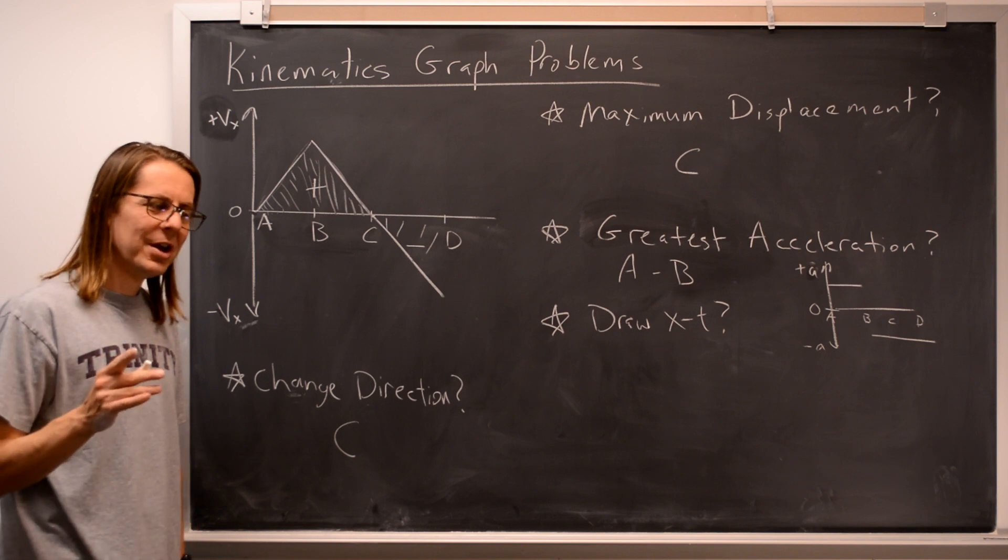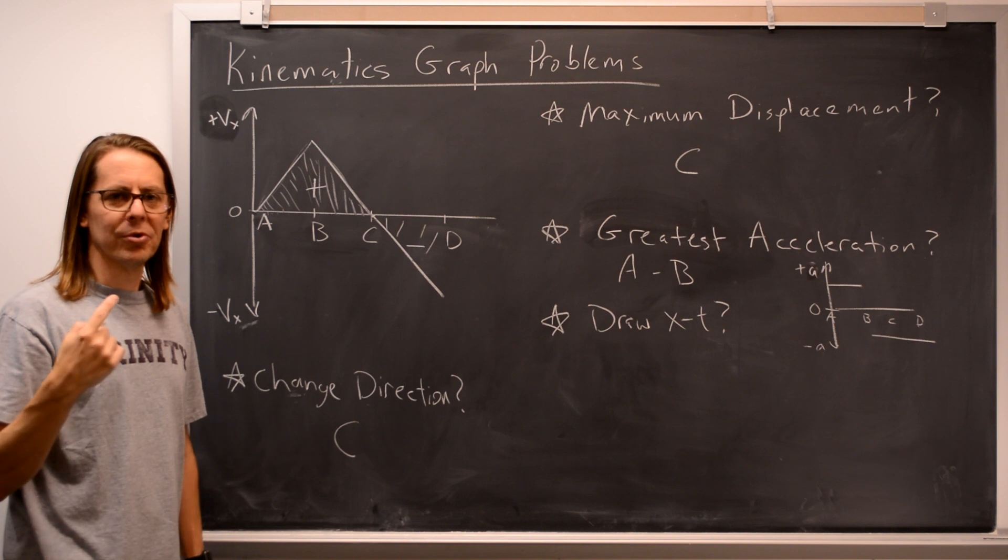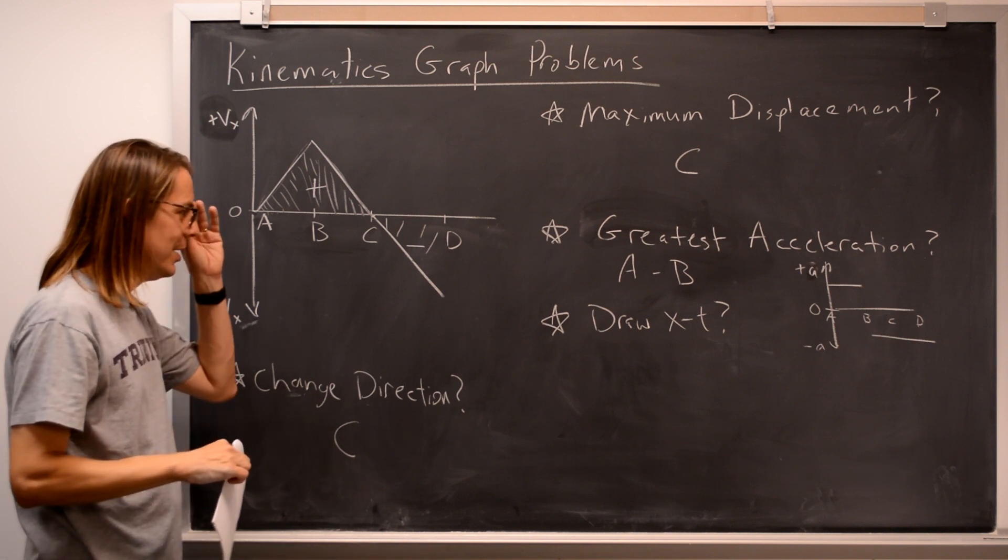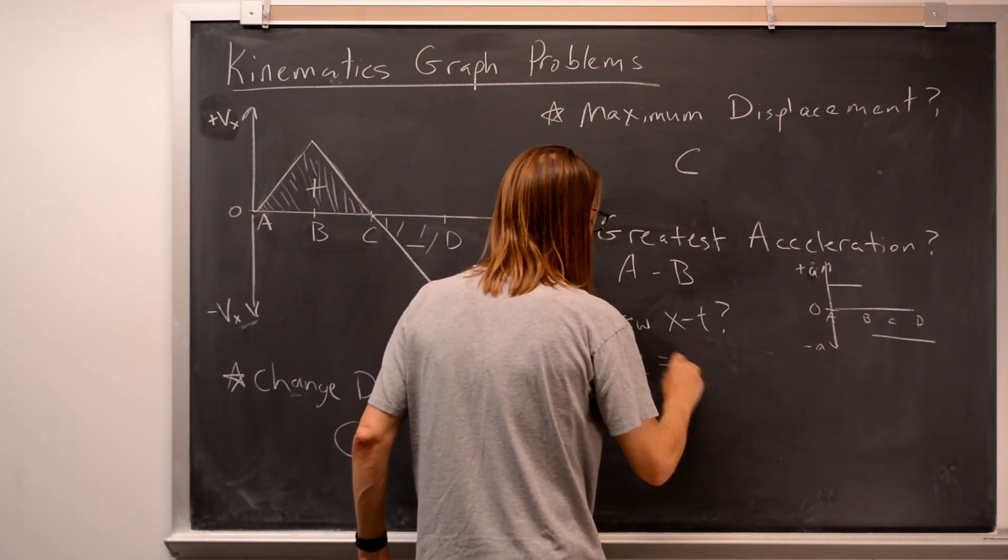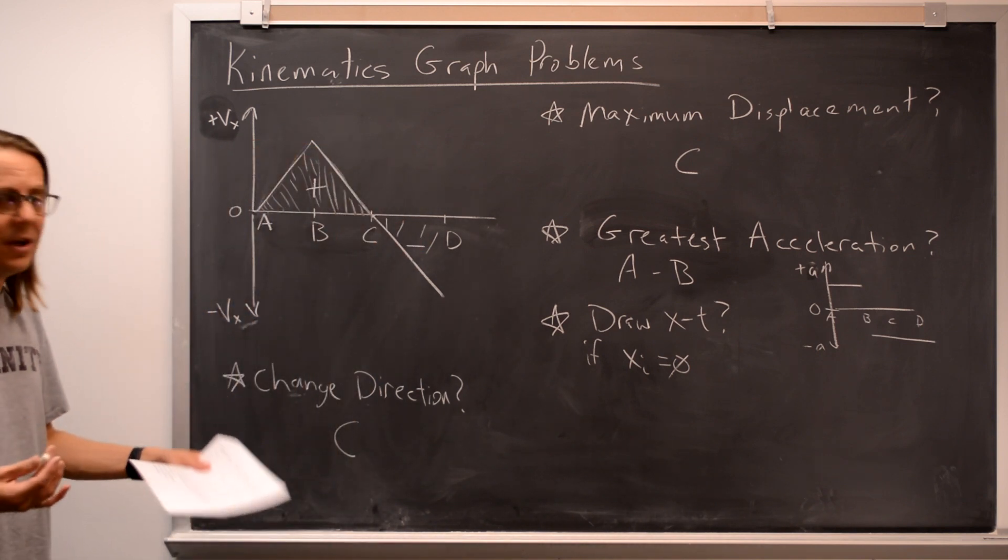Because although we know how the displacement will change, we don't know where the particle started, or where the mass started. So we would actually need an initial position to be able to draw this. So let's say if XI equals 0 at the origin, it starts at the origin, then yeah, we could draw it.